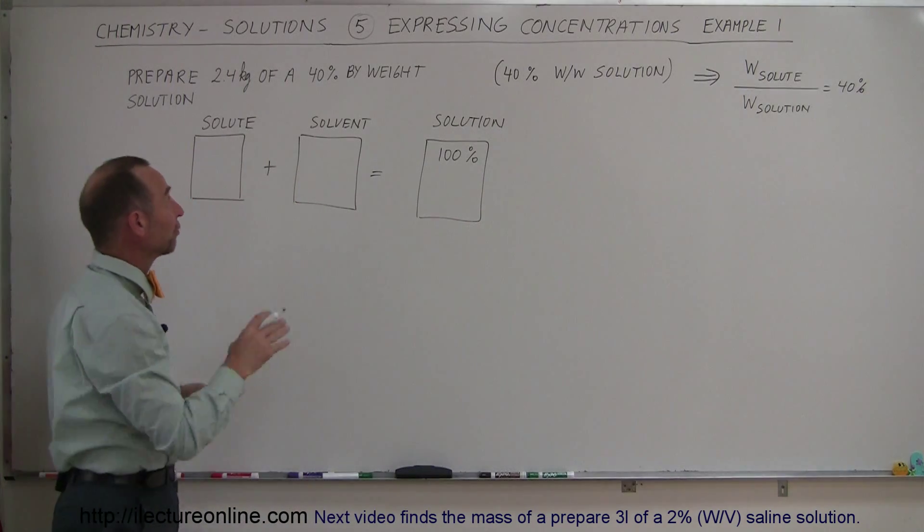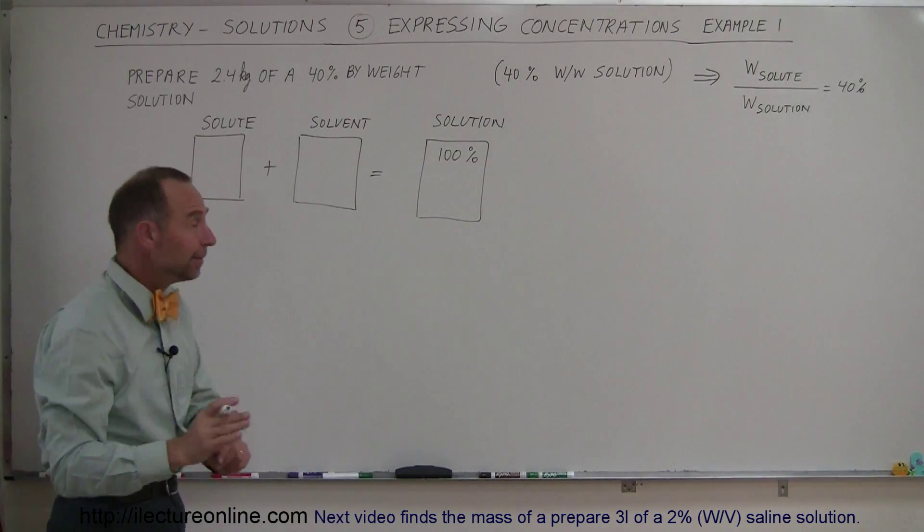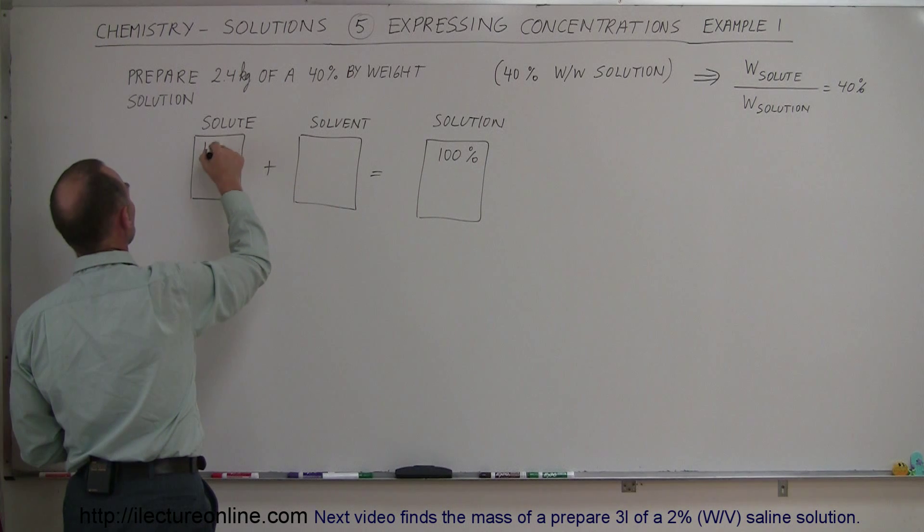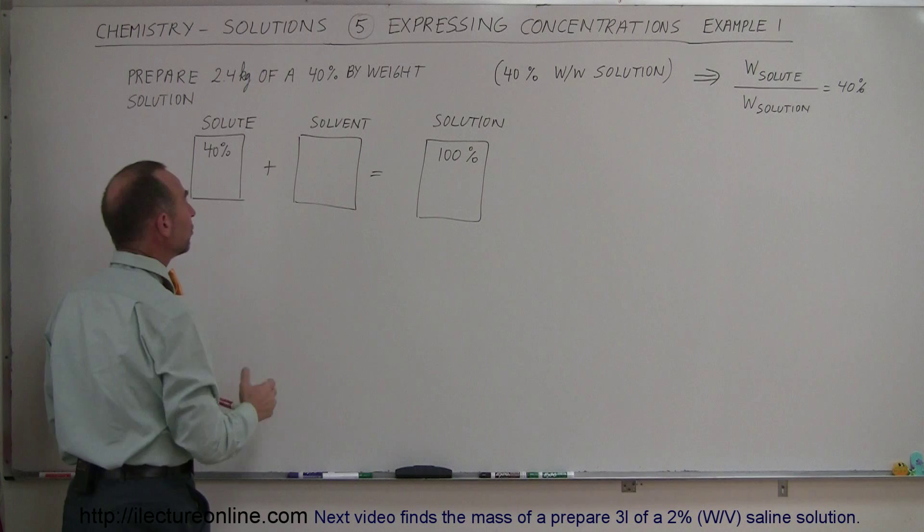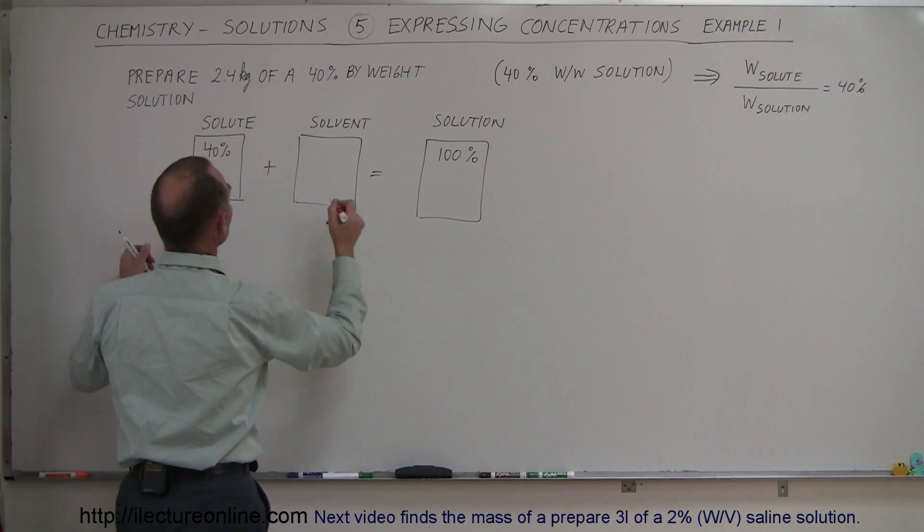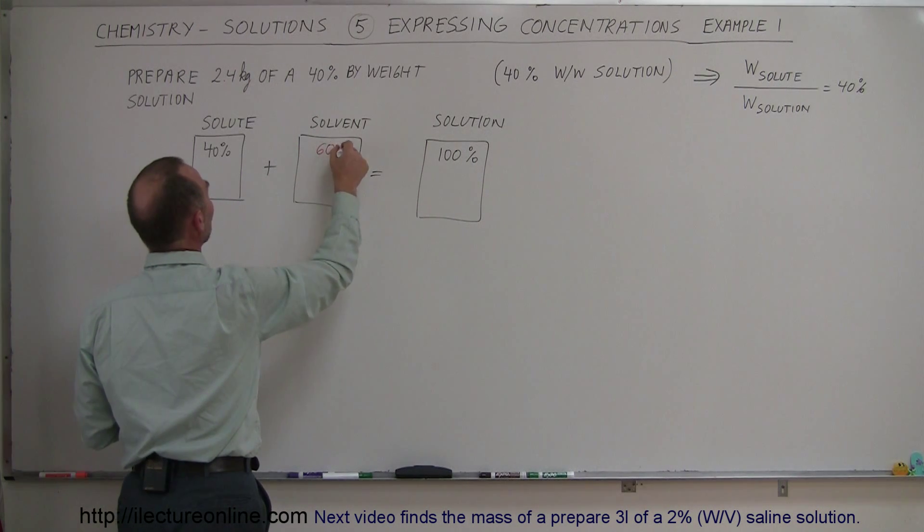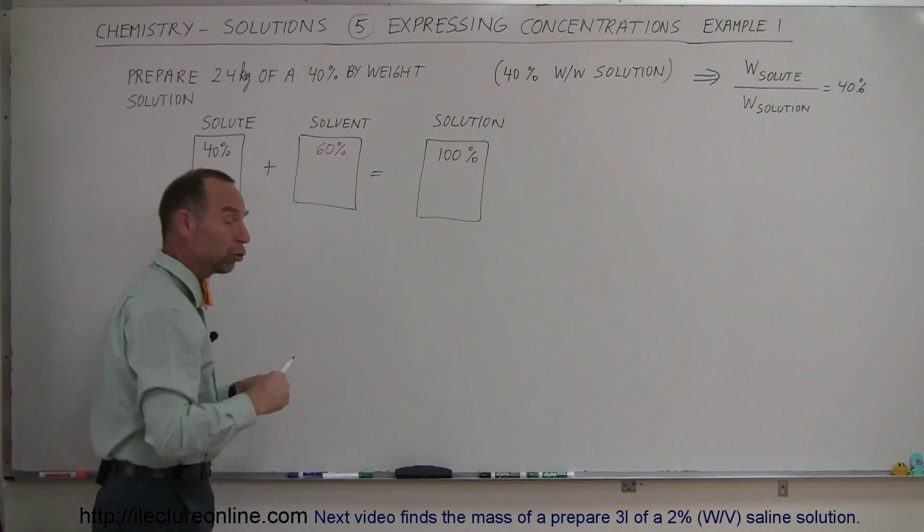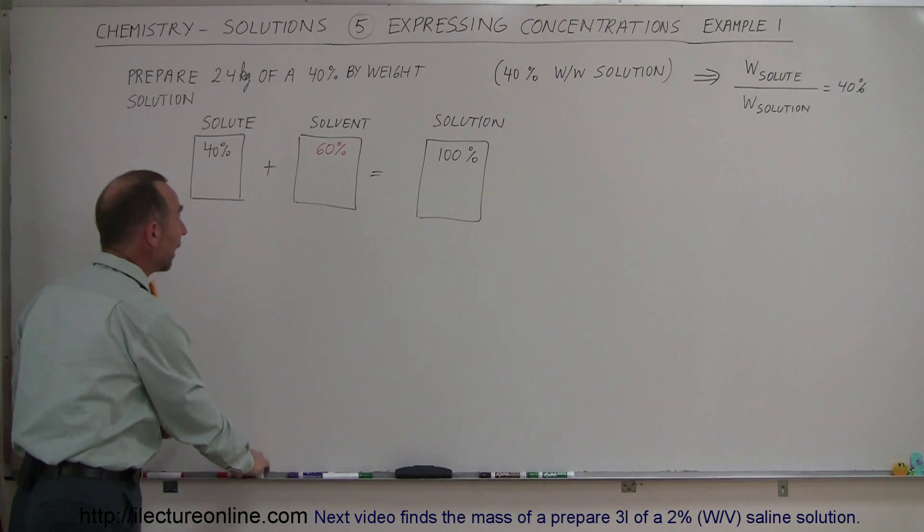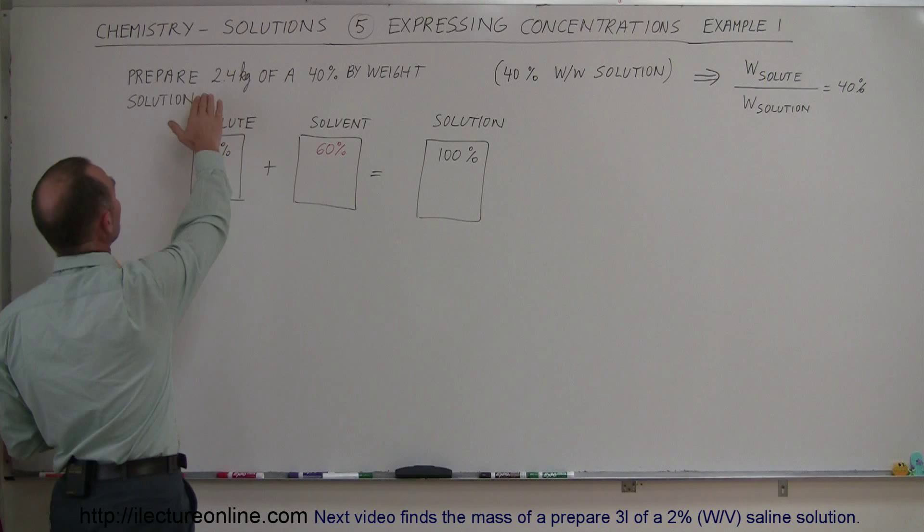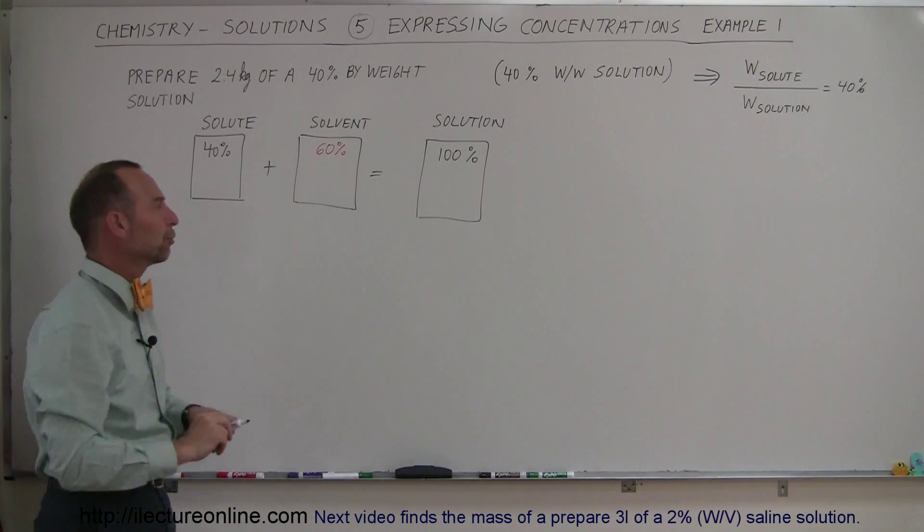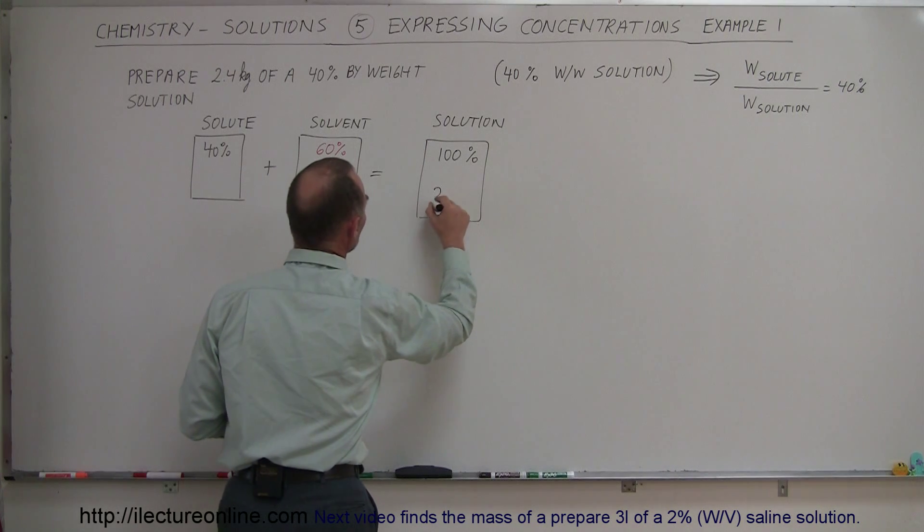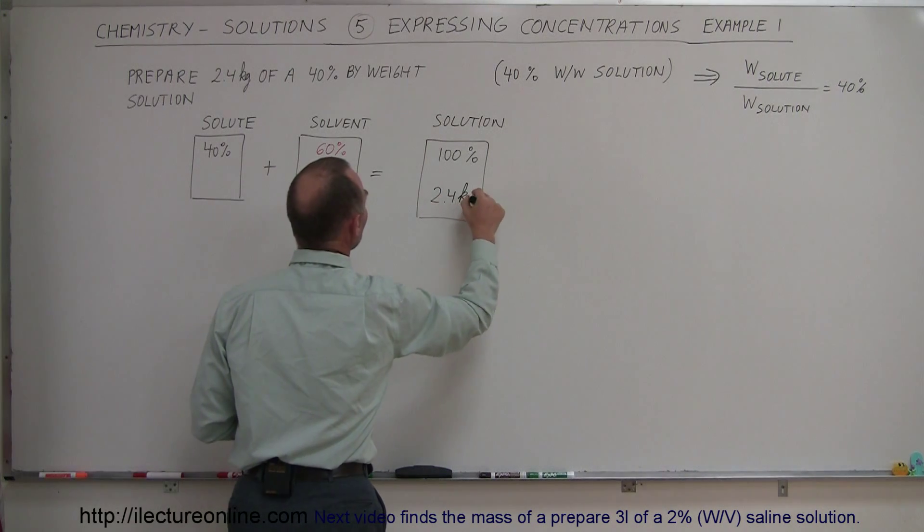They're telling us they want 40% of that solution by weight to be the solute, which means the solvent will make up 60% of the total solution. Now, they also tell us that the final preparation has to have a mass of 2.4 kilograms, so we put 2.4 kilograms there.